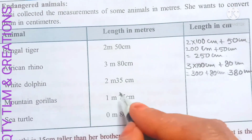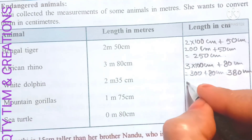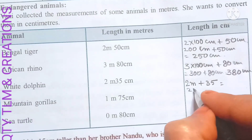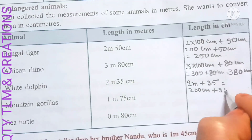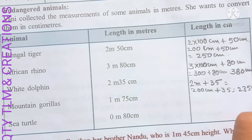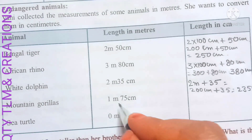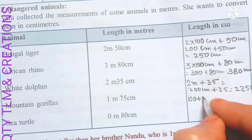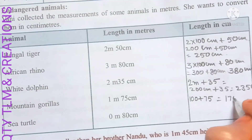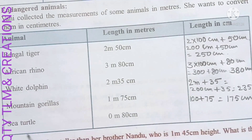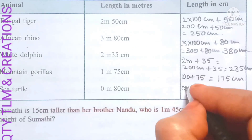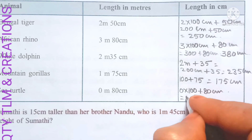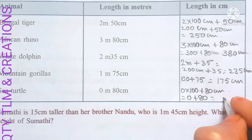White dolphin: 2 meters 35 centimeters — 200 plus 35 equals 235 centimeters. Mountain gorilla: 1 meter 75 centimeters — 100 plus 75 equals 175 centimeters. Sea turtle: 0 meters 80 centimeters — 0 times 100 plus 80 equals 80 centimeters.